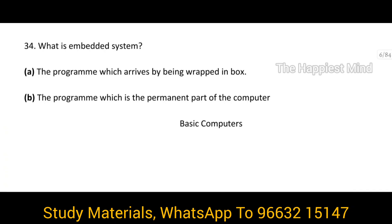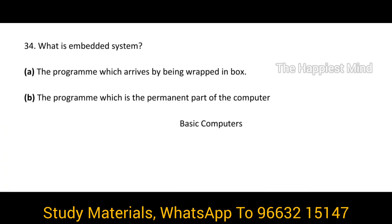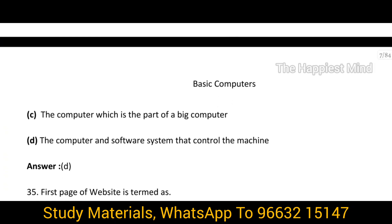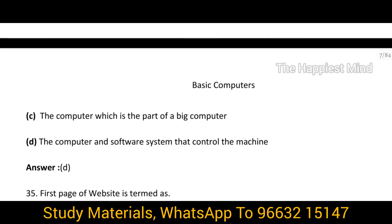Question 34: What is an embedded system? The answer is option D — a computer and software system that controls the machine. That is called an embedded system.